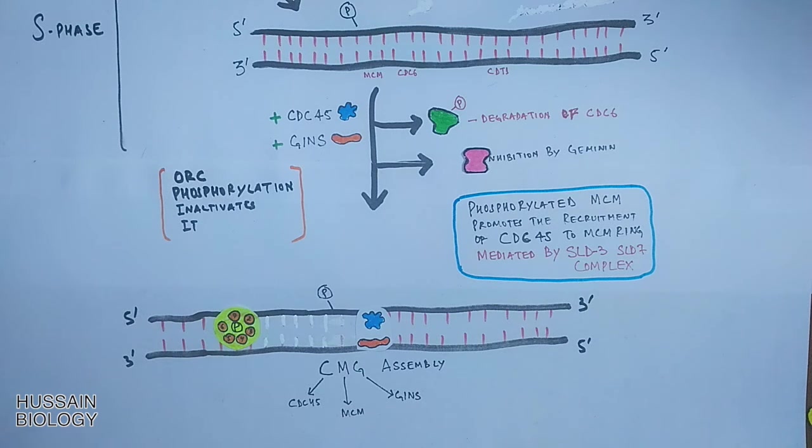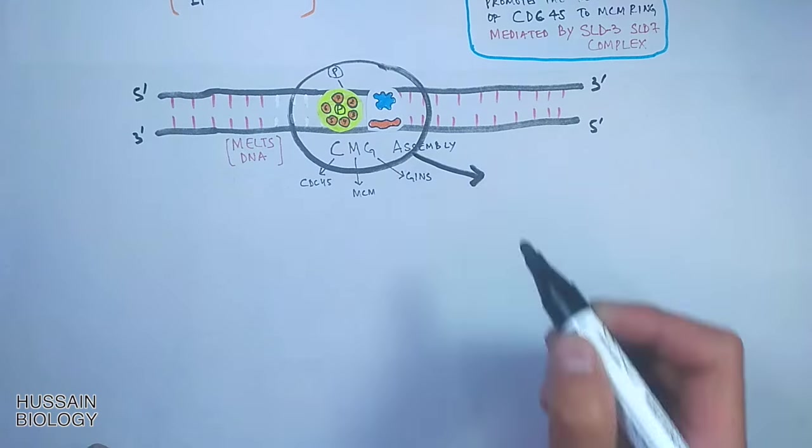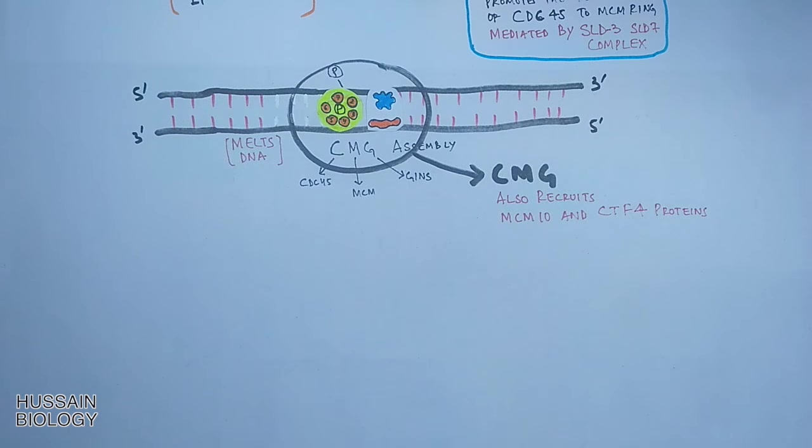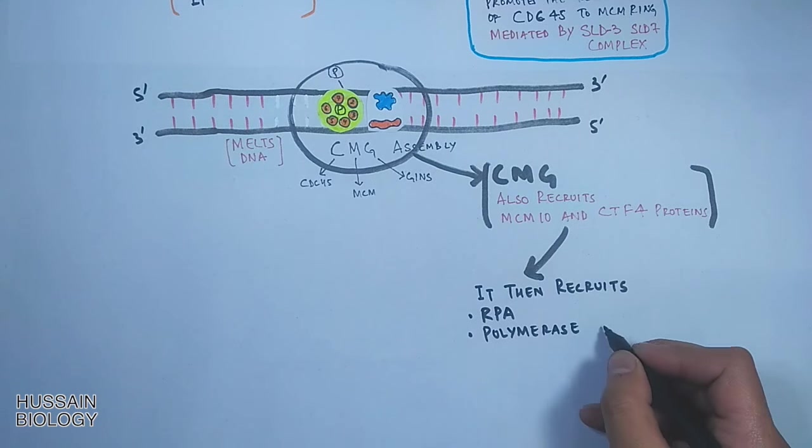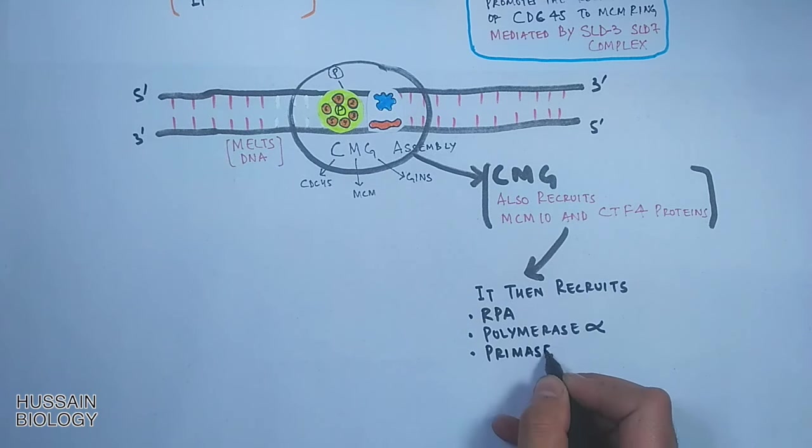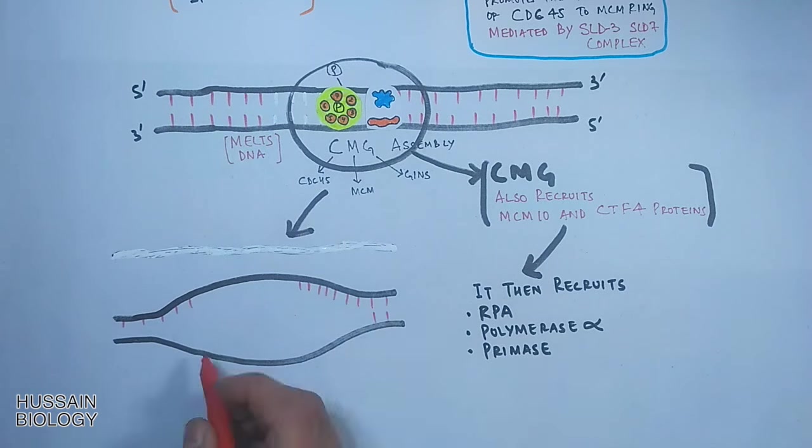This CMG moves across the DNA and melts the DNA in order to give room for polymerase enzymes and other enzymes. The formation of CMG assembly also recruits mcm10 and ctf4 protein to the DNA, and these two proteins in turn recruit RPA protein, polymerase alpha, and primase.